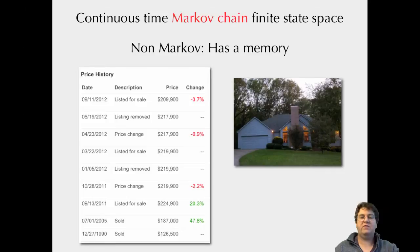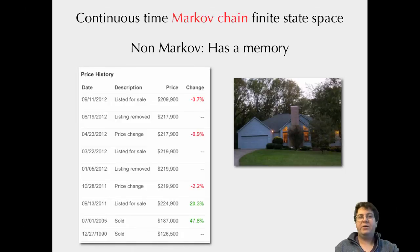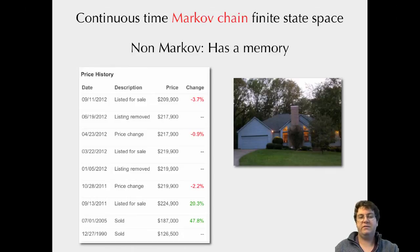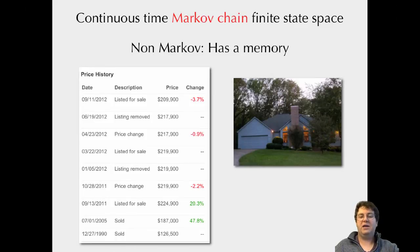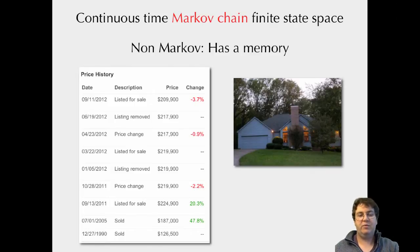Of course, not everything is Markovian. Some things are non-Markov and actually have a memory. For example, when deciding to sell a house, you look at the previous times it sold — it was sold for this amount at this point, then for this amount at that point — and you always try to sell it for more than you bought it for. There's this memory of what the price has been through time that affects the price you set at the moment.